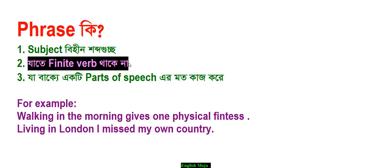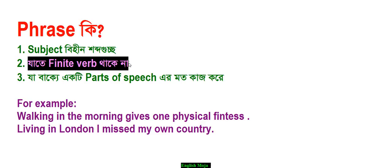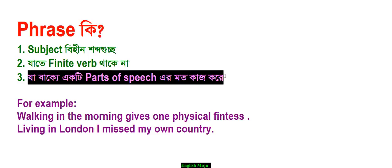I will show you the shortcut technique. In this way, V1, V2, V3 is equal to a verb — is finite verb. This is the finite verb. Number 3 is the first part of the verb. The only way to do one part of the verb is to do one part of the verb.